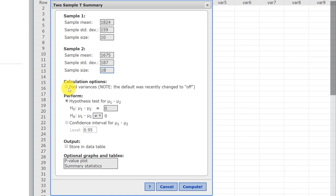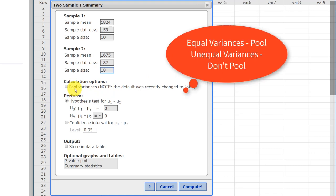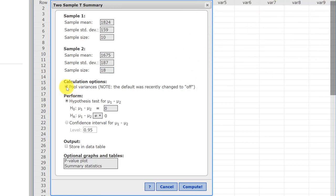And we go down to the next part, and this is the critical part. It says note the default was changed to off, which means it's not going to pool variances. You pool variances if you have equal variances. So we do, so we need to check that. Then we go down, we want the confidence interval. That's all we have to do. We want the 95, so it's already got .95 in there. And I'm just going to click compute.